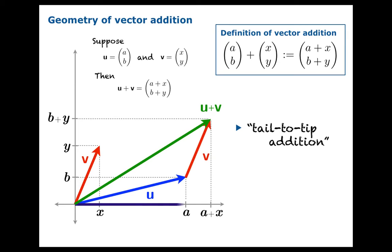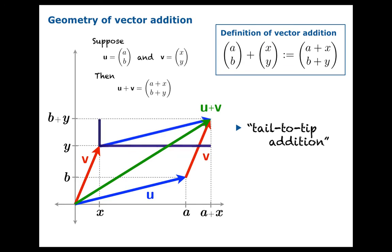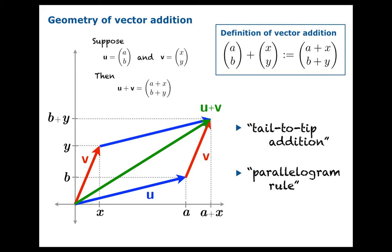Of course, we could have done this the other way, by concentrating on the other segments first, and you would obtain the same picture — which should not be shocking, because if vector addition is commutative, playing the same game with v plus u should give the same vector. And it does. You'll notice that the figure we get is a parallelogram, and that leads to another way to think about this — sometimes called the parallelogram rule: create a parallelogram with u and v spanning adjacent sides, and u plus v is going to be the diagonal vector.